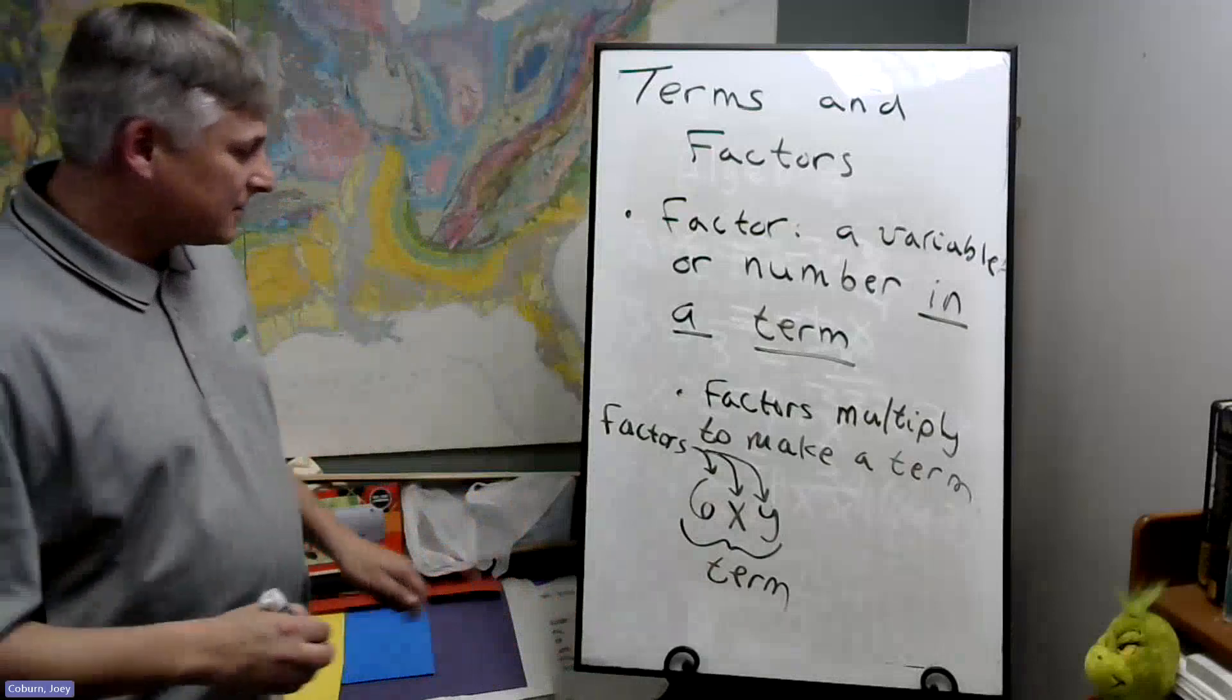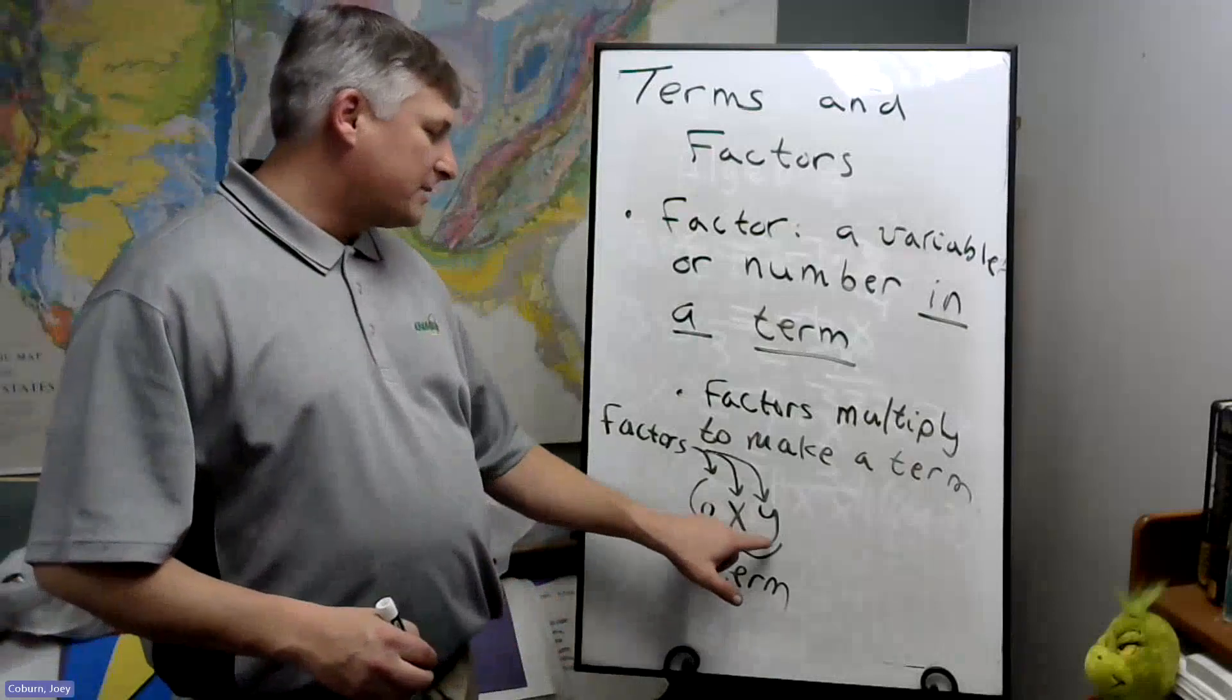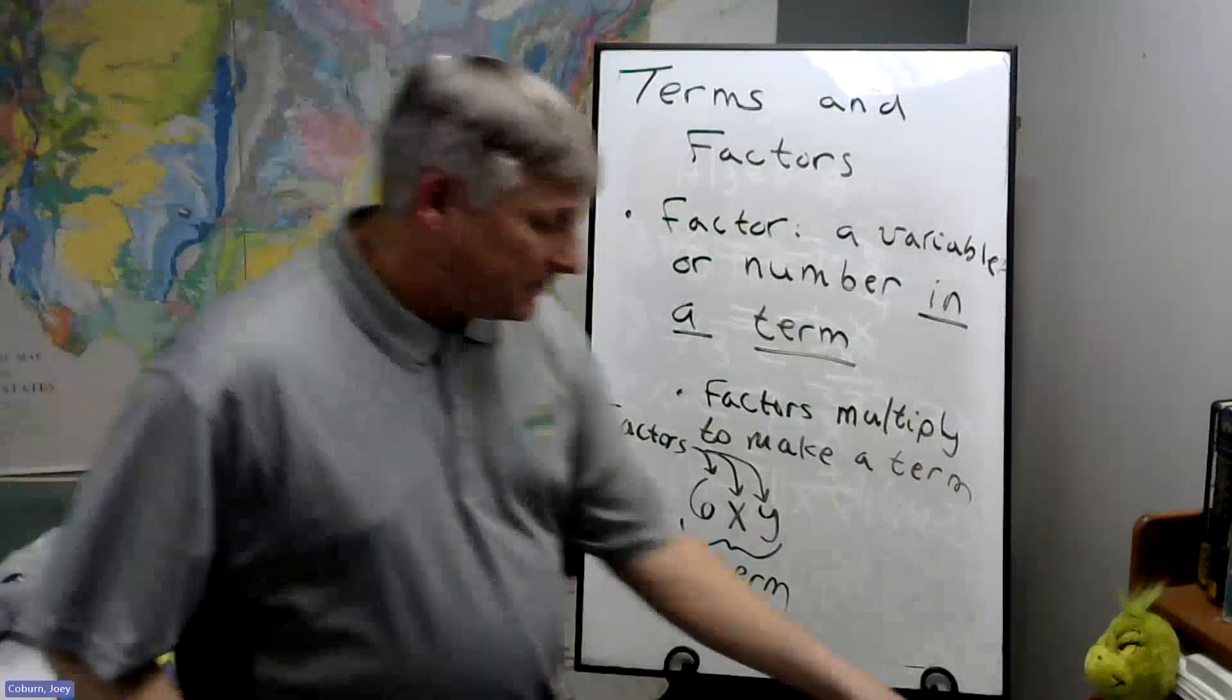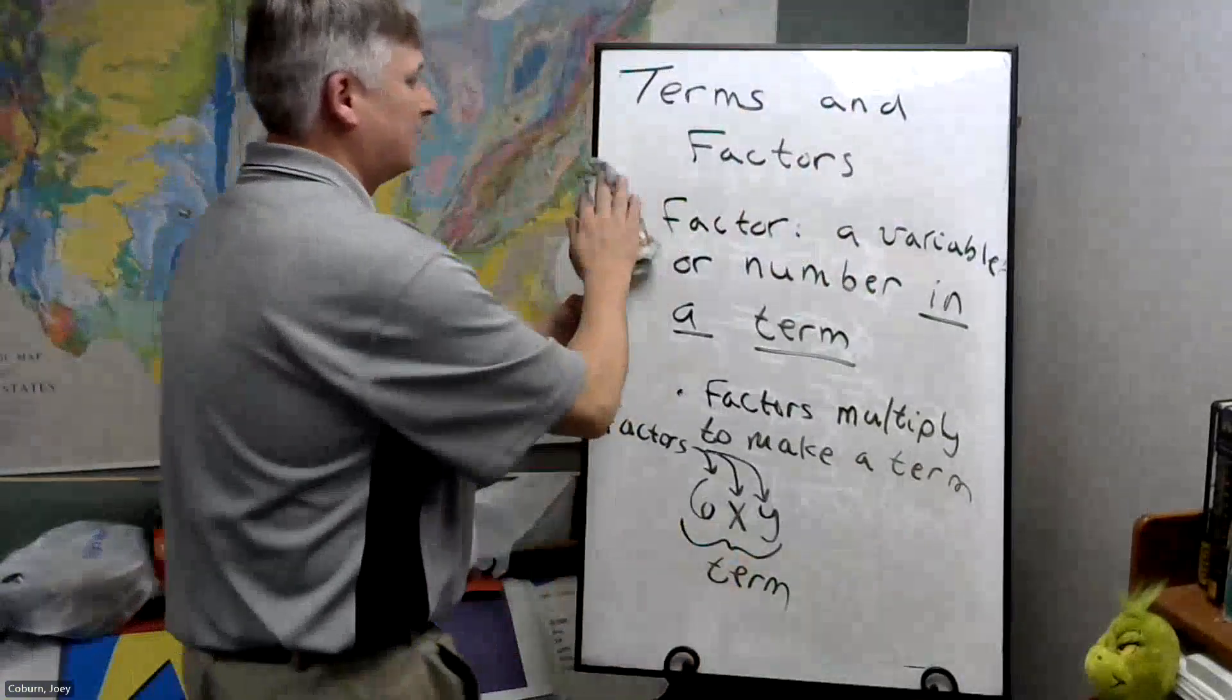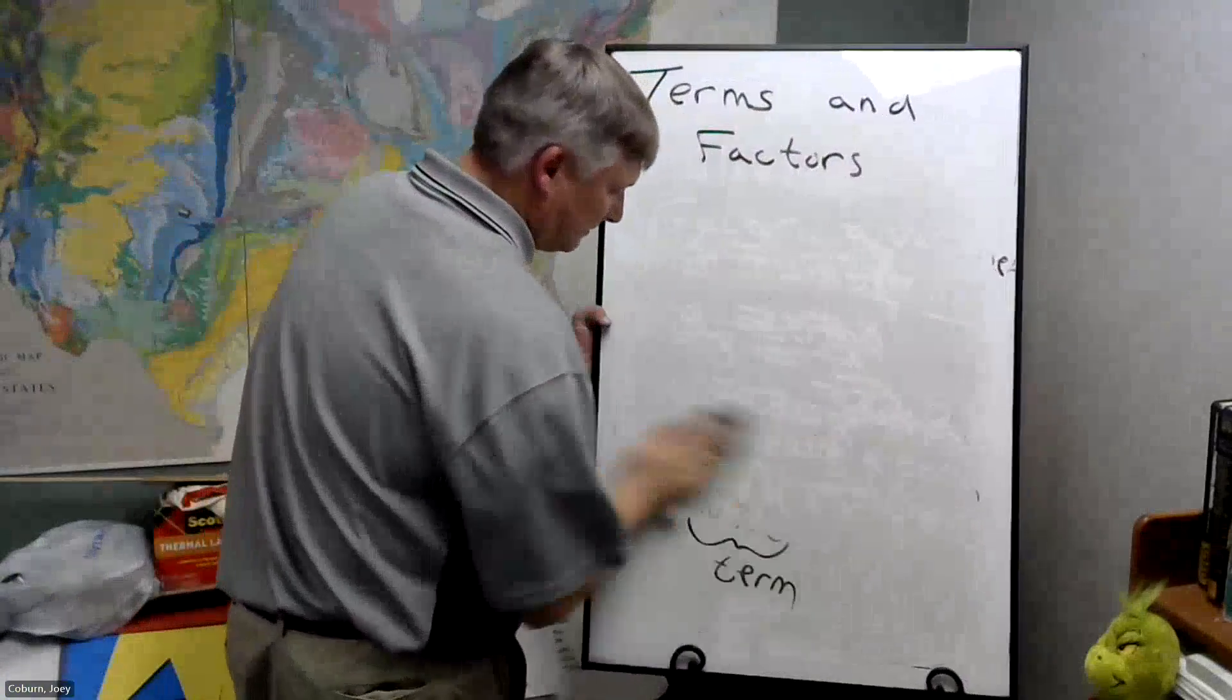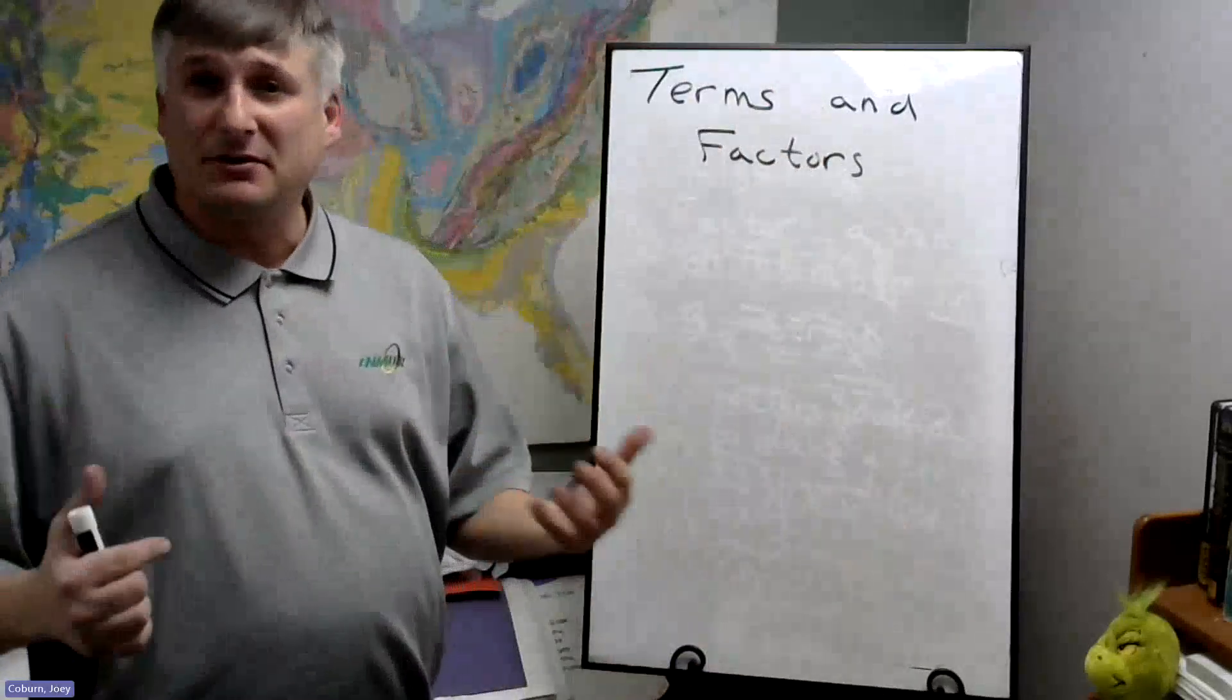So you have three factors: a number, a variable X, and another variable Y. And terms are separated by pluses and minuses.